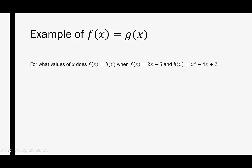Okay, how about here? For what values of x does f of x equal h of x, when f of x equals 2x minus 5, and h of x equals x squared minus 4x plus 2? And there could be a couple different things that happen, right, because f of x equals 2x minus 5, that's a linear equation, and it's going up, so it's going to be something like that, whereas h, we have a quadratic equation, so it's going to look something like this.